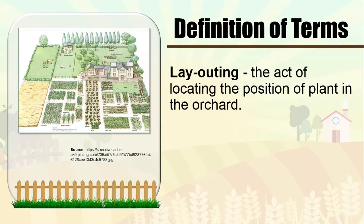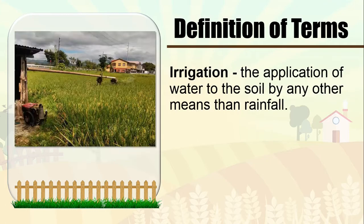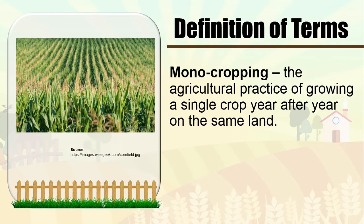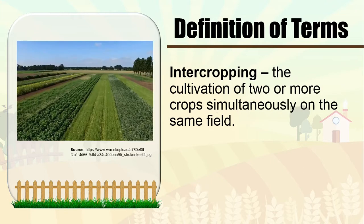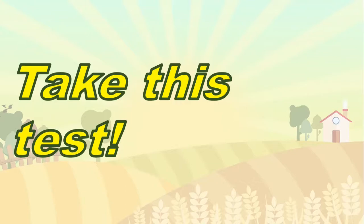Before we proceed, let's define these terms. Layouting: the act of locating the position of a plant in the orchard. Irrigation: the application of water to the soil by any other means than rainfall. Monocropping: the agricultural practice of growing a single crop year after year on the same land. Intercropping: the cultivation of two or more crops simultaneously on the same field.